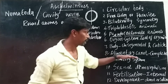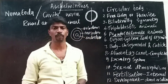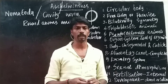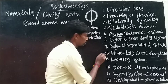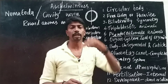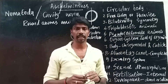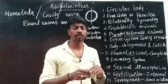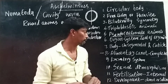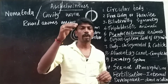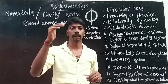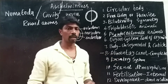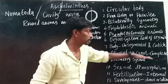The alimentary canal is complete and well developed. The digestive system is well developed — unlike the previous three phyla where it is not well developed. In Aschelminthes, the alimentary canal is well developed, with a mouth at the anterior part and an anus at the posterior part.